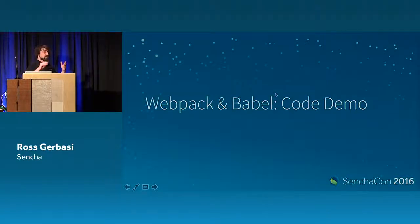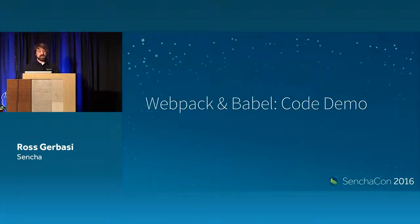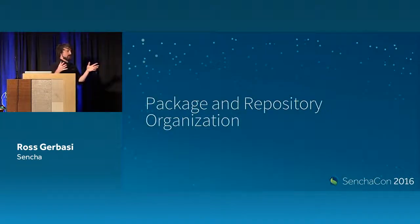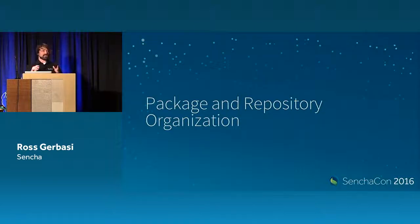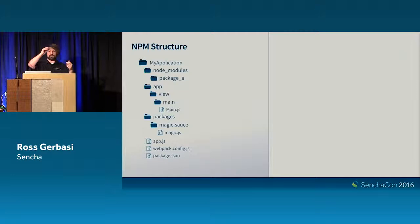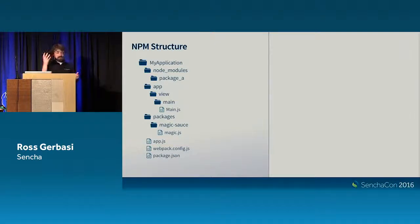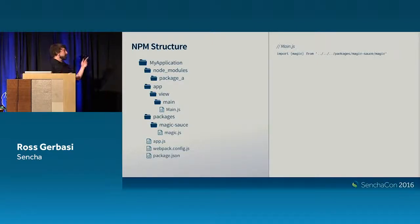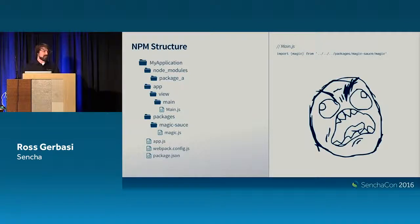We've solved how we want to do loading — we can alias things and put them where I want. But we have another issue: how do we organize all these packages, projects, and repositories? This is currently the Node/NPM structure as it exists right now. You have your app, a node_modules folder with about 70 billion modules, and let's say we have a package called 'magic sauce.' In order for main.js to use magic sauce, we end up doing something like dot dot slash dot slash dot slash packages... which induces massive rage in developers.